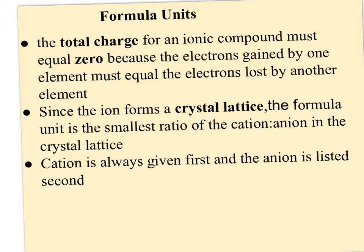And since the ion forms a crystal lattice, the formula unit then is going to be the smallest ratio of the cation to the anion. We always list it in that order, cation then anion. Typically formulas list the elements in the order they show up from the left side of the table to the right. So the cation is always given first, the anion is listed second.